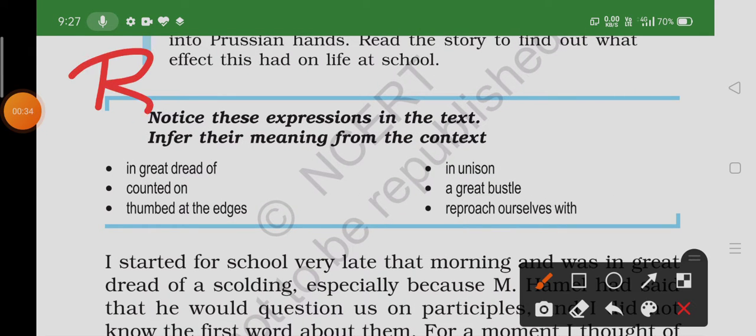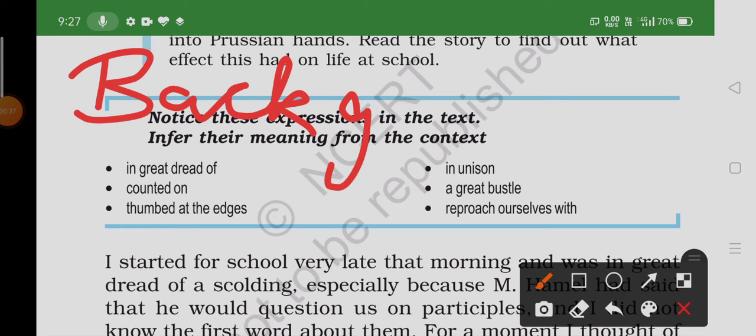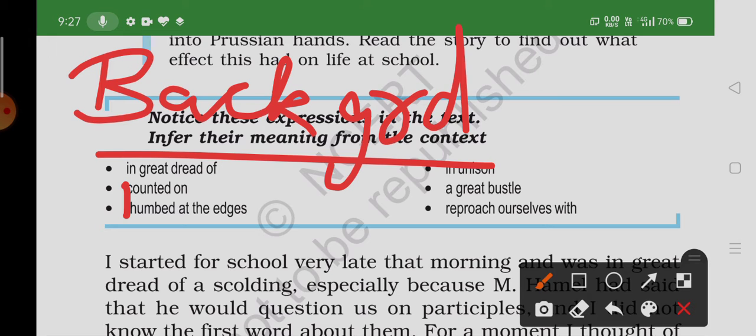Background of the story. The Last Lesson is set in the days of the Franco-Prussian war, in which France was defeated by Prussia, led by Bismarck. The French districts of Alsace and Lorraine went into Prussian hands.